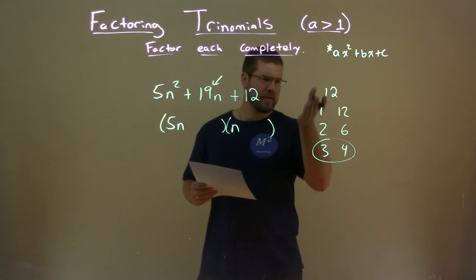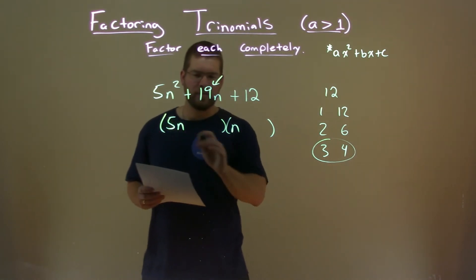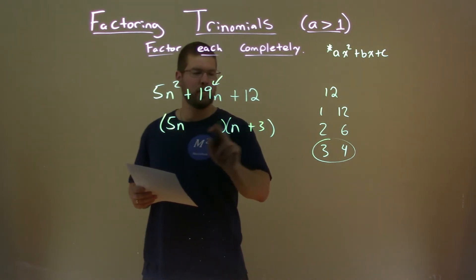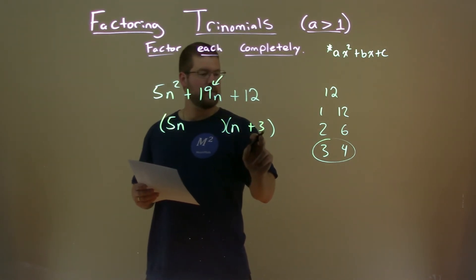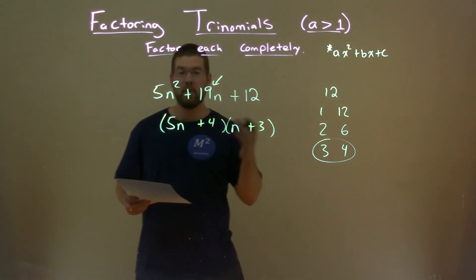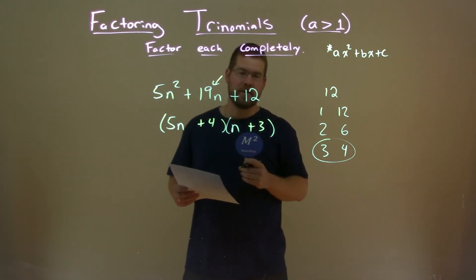And the more you practice, you'll be able to guesstimate which one would be most likely the answer. So 5n times a 3, put a 3 here on this side, because 5n will be multiplied by a 3, gets you 15, plus 4, goes right there. And there we have our answer. 5n plus 4 times n plus 3, and that is the answer factored.